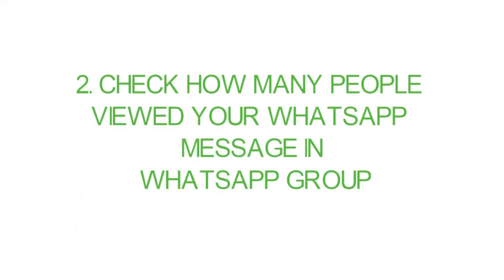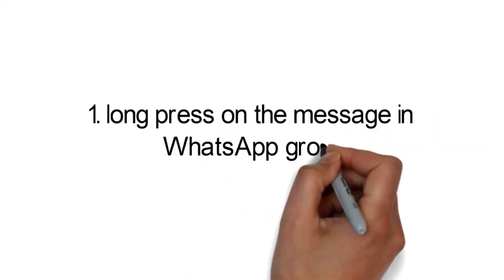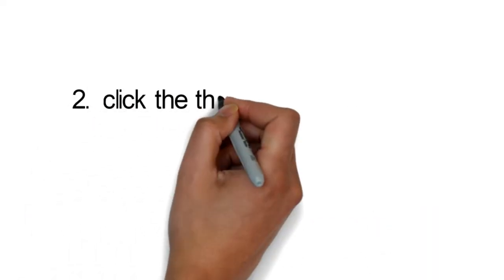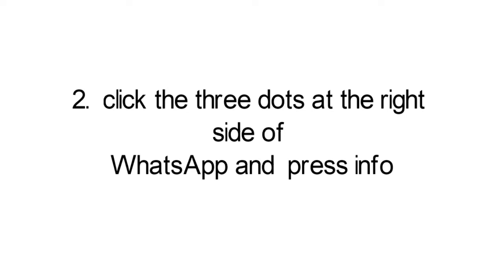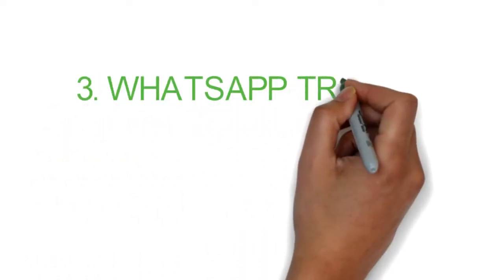WhatsApp trick 2: Check how many people viewed your WhatsApp message in a WhatsApp group. 1. Long press on the message in the WhatsApp group. 2. Click the three dots at the right side of WhatsApp and press Info.